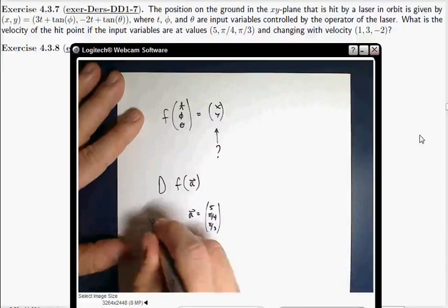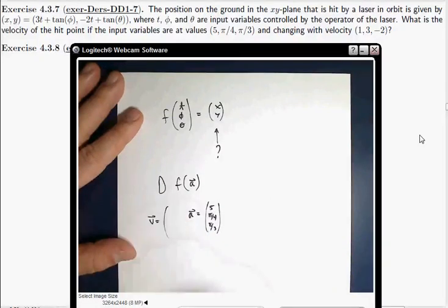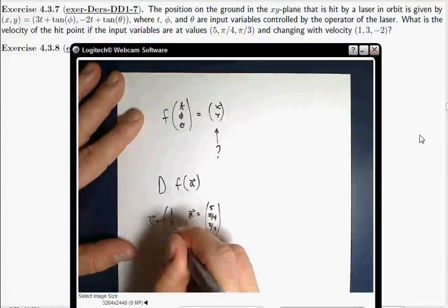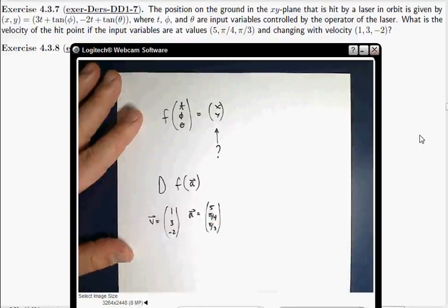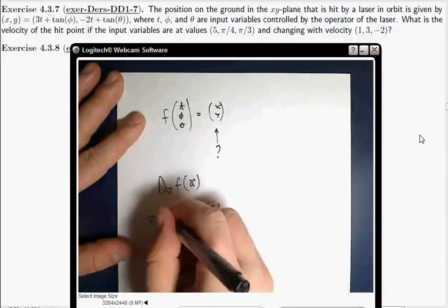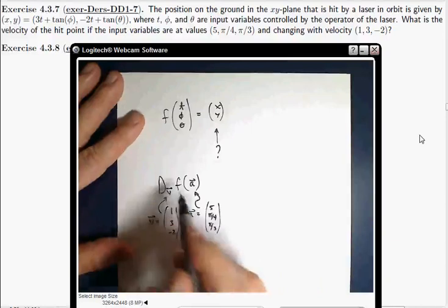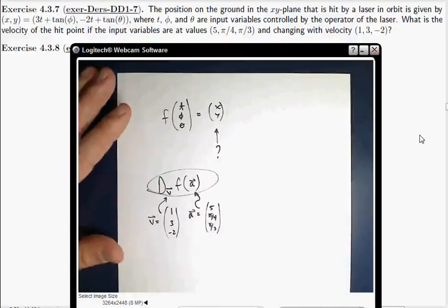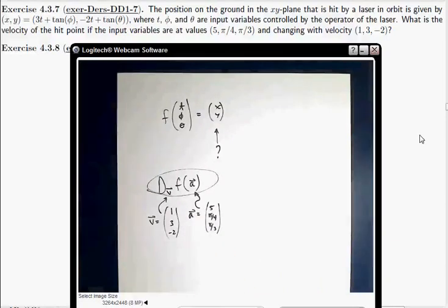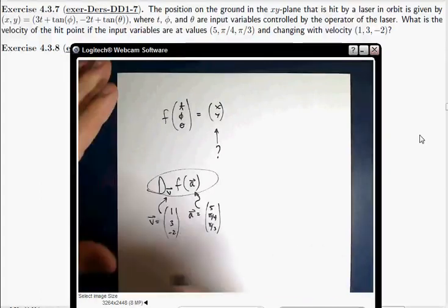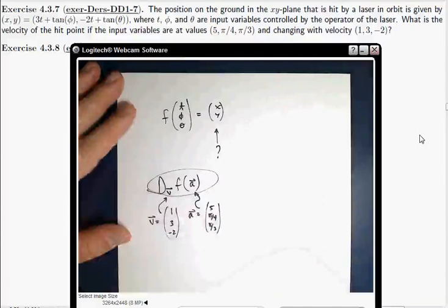And we've got a velocity vector that's given by 1, 3, negative 2. And so that's the V and that's the A. And we just want to compute that directional derivative. Does that make sense? So now, of course, we have a definition. Do you want me to go through the details? Or does this make sense at this point?